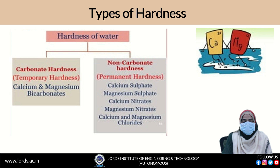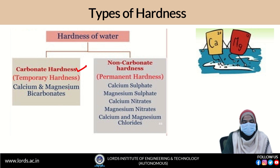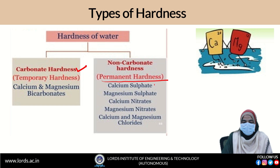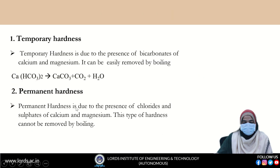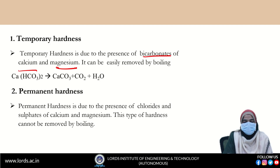Types of hardness: we can classify hardness into two parts. The first is carbonate hardness — calcium carbonate and magnesium carbonate hardness — which ultimately causes temporary hardness. Non-carbonate hardness, also known as permanent hardness, is due to calcium sulfate, magnesium sulfate, calcium nitrate, magnesium nitrate, calcium chloride, and magnesium chloride. Whatever Ca²⁺ and Mg²⁺ ions are present, they form the hardness. Temporary hardness is due to the presence of bicarbonate of calcium and magnesium, which can be easily removed by simple boiling.